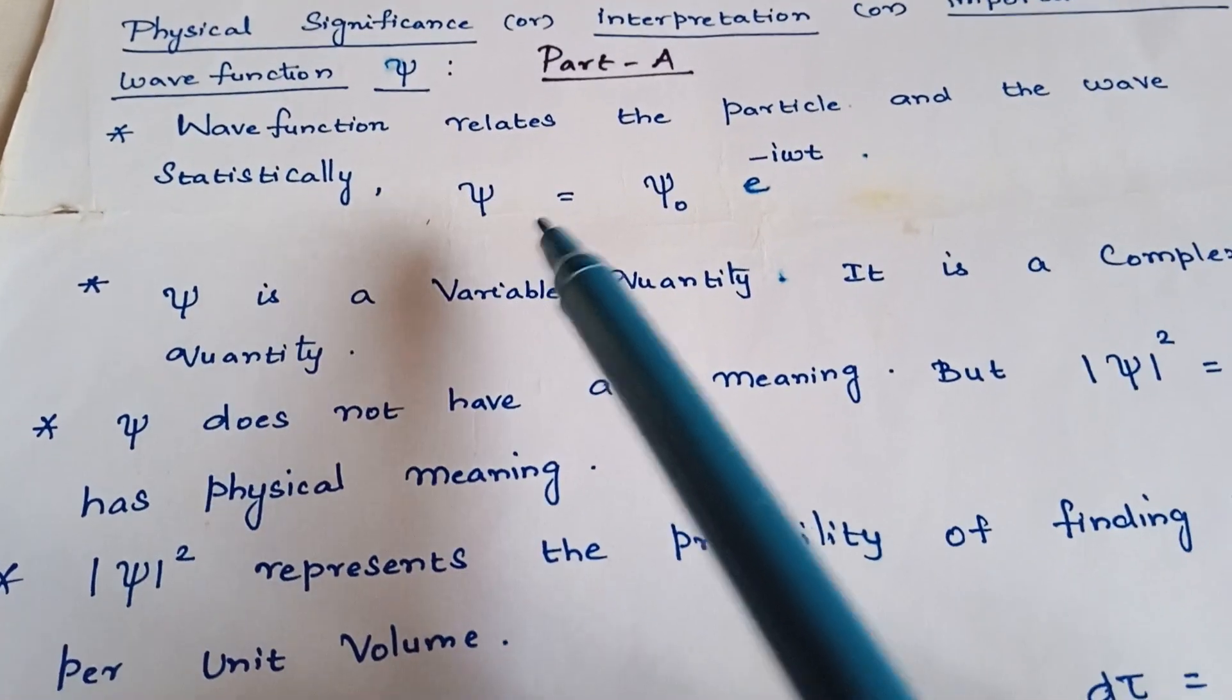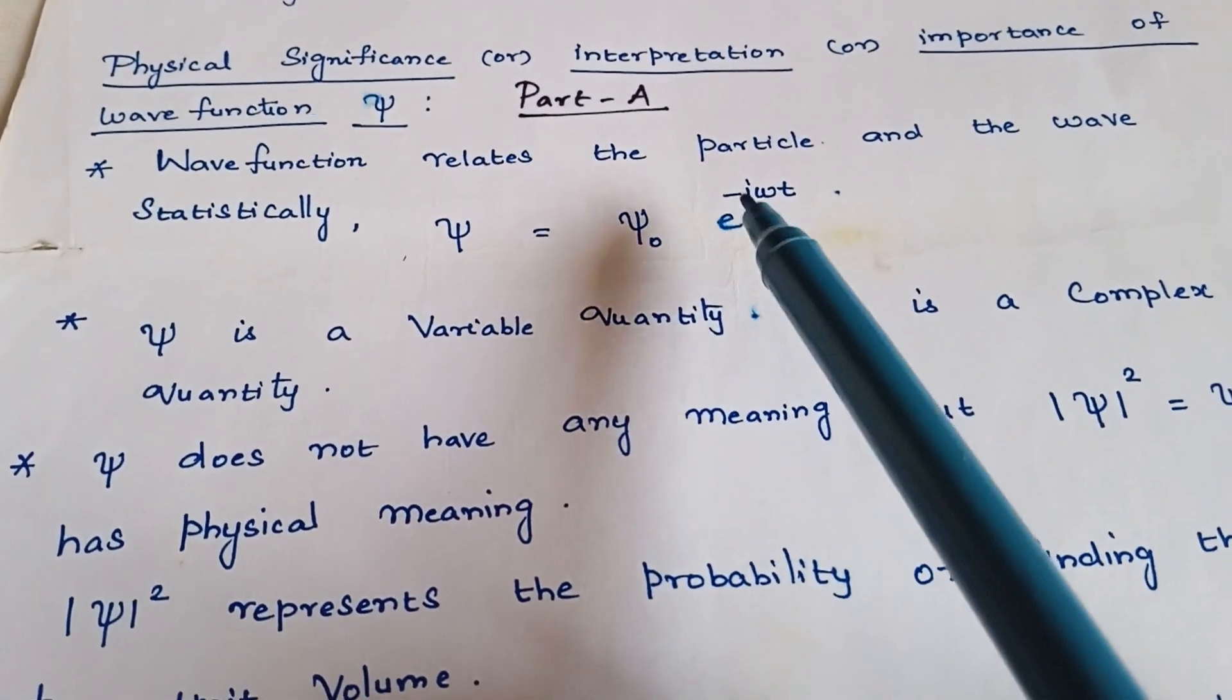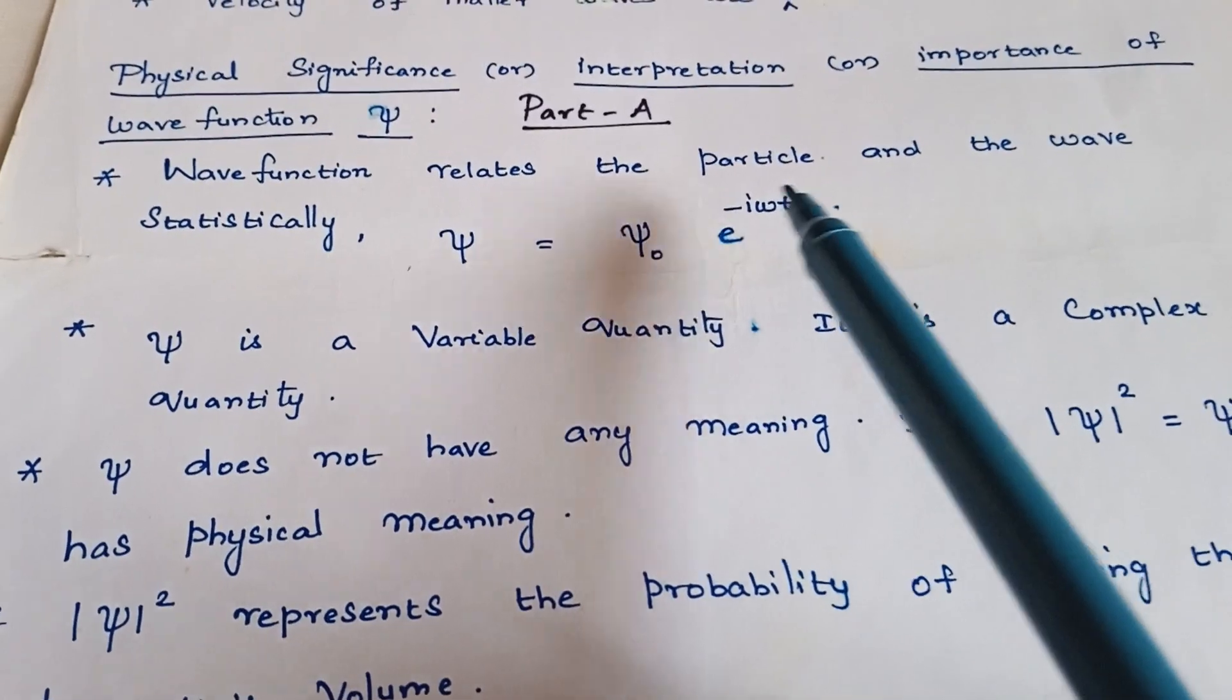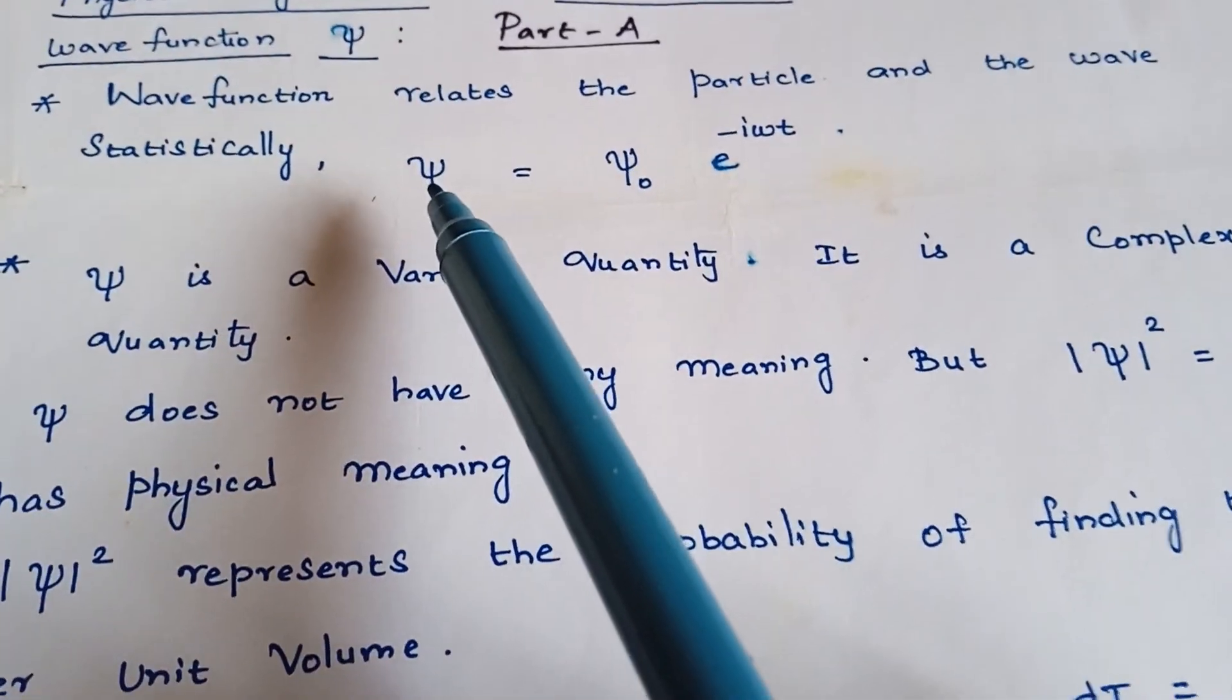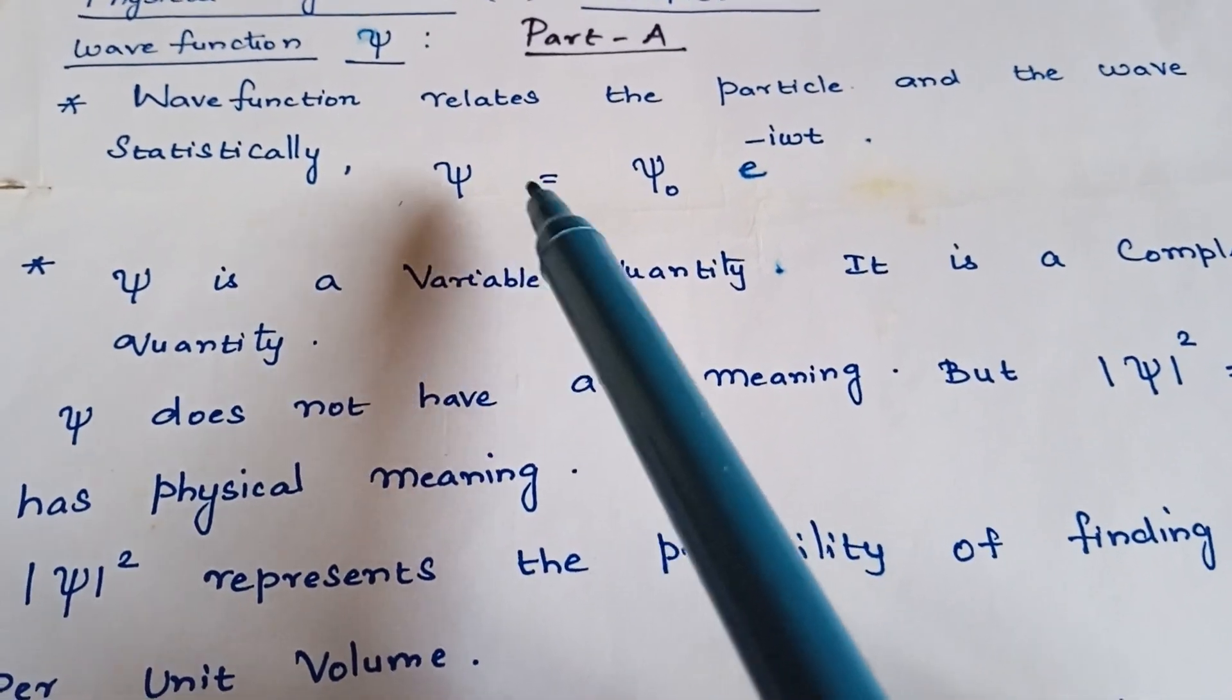It is represented by the formula psi is equal to psi 0 e power minus i omega t, where psi can be taken as x, y, z, the three coordinate axes with respect to time.